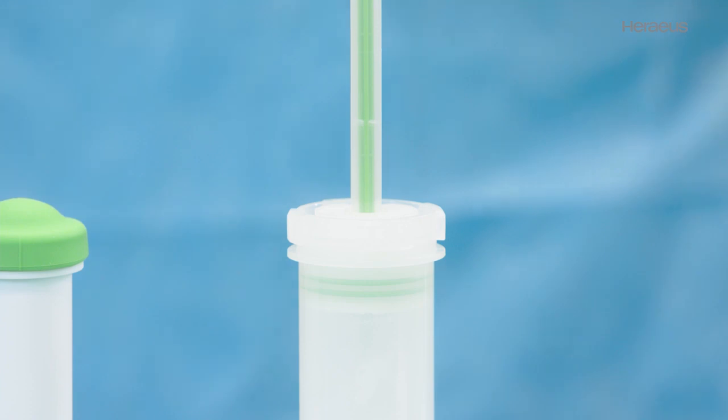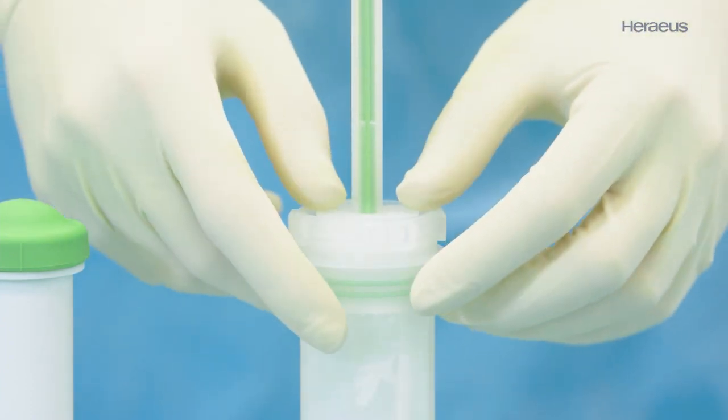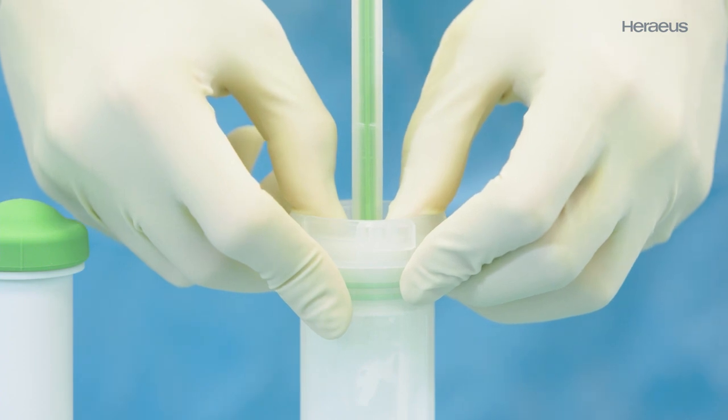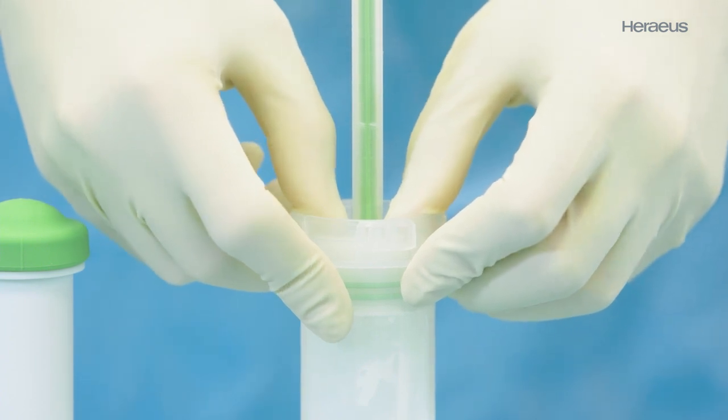Then push the sealing ring down into the cartridge and ensure that it is fully pressed so that the cartridge is closed vacuum tight. Please remember not to change the position of the mixing rod.